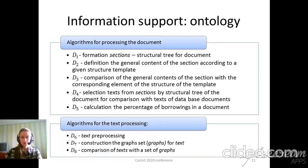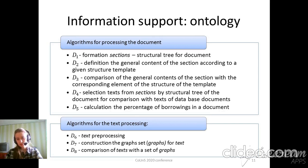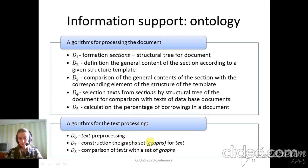It is very important that the elements of the terminal set are algorithms for working with text and documents. We extract some algorithms for processing documents. For text processing there are algorithms for formation of sections, definition of general content, comparison of general content, matching sections with corresponding elements, calculation of percentage, balance in document, etc., and three algorithms for processing our documents: text processing, construction of graph sets, and comparison of text with a set of graphs.